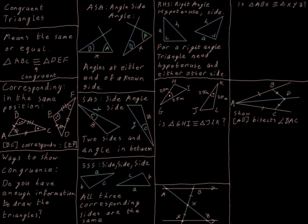To use angle-side-angle, you would show that you have a side you know, and then show that the angles coming off both ends of that side are the same. Another method is SAS — side, angle, side. If you know the length of two sides and the angle in between them, then the third remaining side must be the same length in both triangles. So if the corresponding sides and the included angle are the same, you can show the triangles are congruent by side-angle-side.